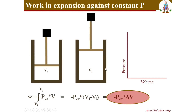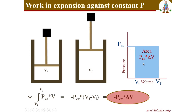Looking at the pressure-volume graph for this process: the external pressure is constant and the initial and final volumes are marked. The area under the graph gives the product of external pressure times change in volume, which equals the work done. So the area under the pressure-volume graph gives the work done in this process. Such a graph is called an indicator diagram.